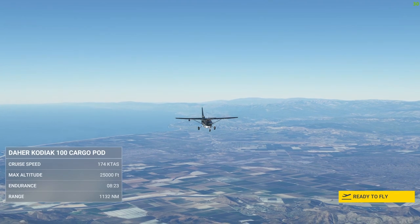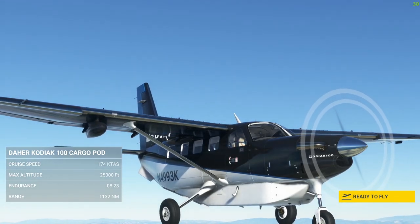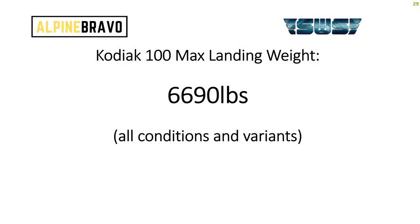The first thing we'll do is hop into the classroom and consider some of the landing performance for the Kodiak. When we come to think about landing performance, there are a couple of elements: the maximum landing weight, the landing distances, and the landing speed. The maximum landing weight for the Kodiak is very straightforward in all conditions and all variants — whether you've got Tundra tyres, cargo pod, whatever the altitude — it's 6,690 pounds.